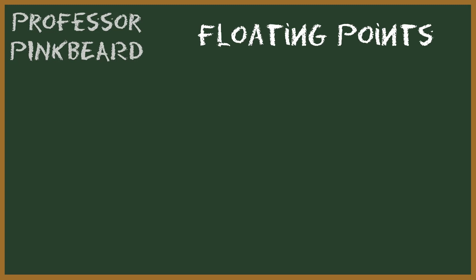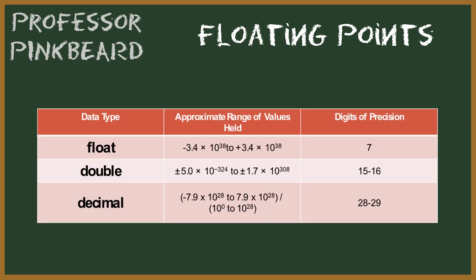While all the data types we've talked about were for storing integers, if you need to store a real number — a number with a decimal place — you would use a floating point type. There are three floating point types in C#: float, double, and decimal. Floating point types after a certain point are just an approximation, and while they do have some digits of precision, things can happen that will lose that precision depending on how large or small a number actually is.